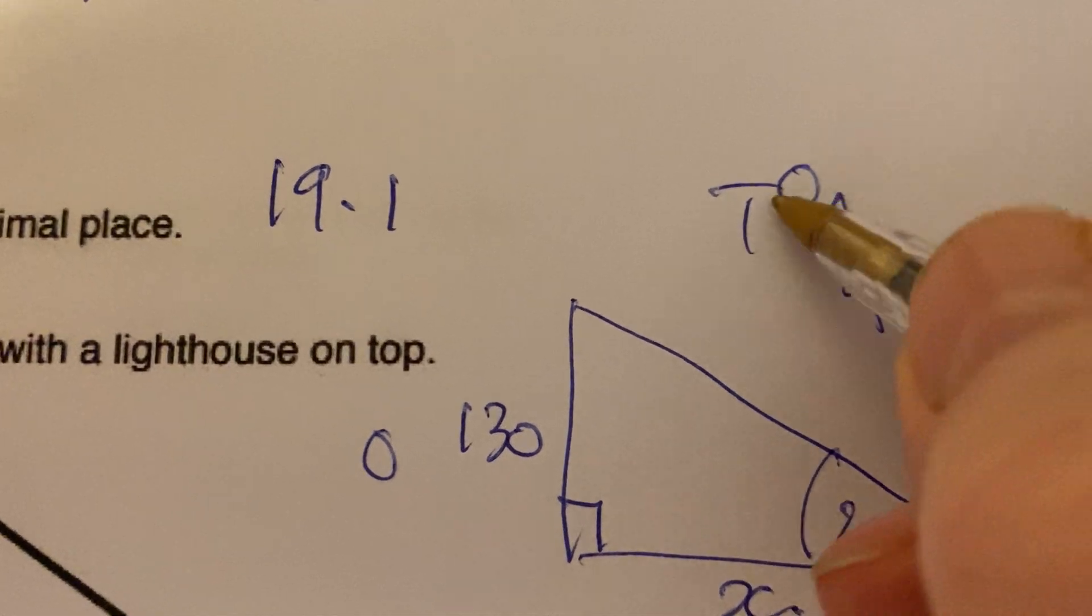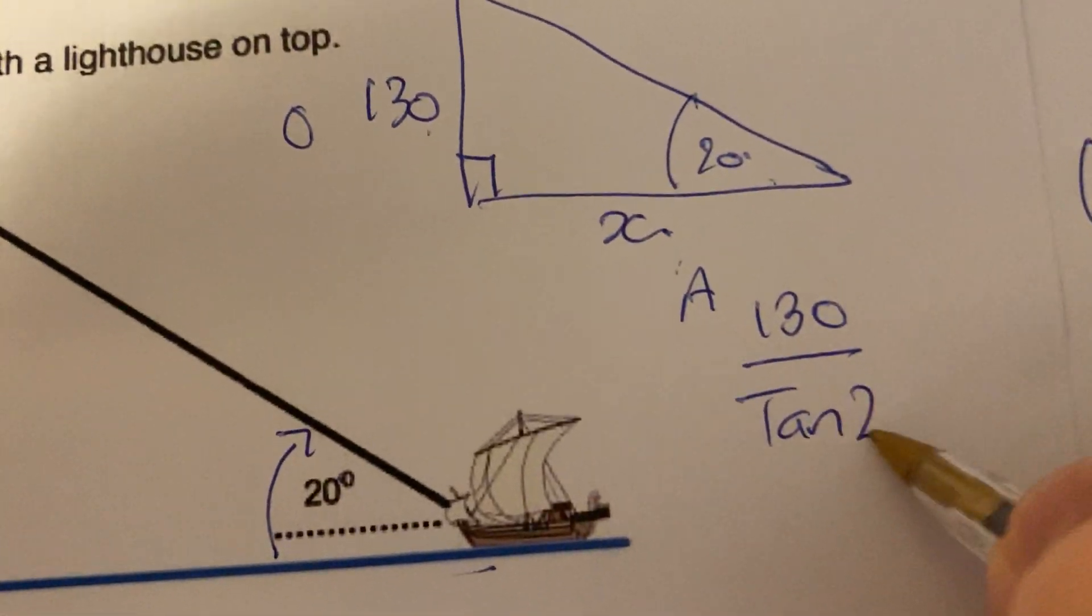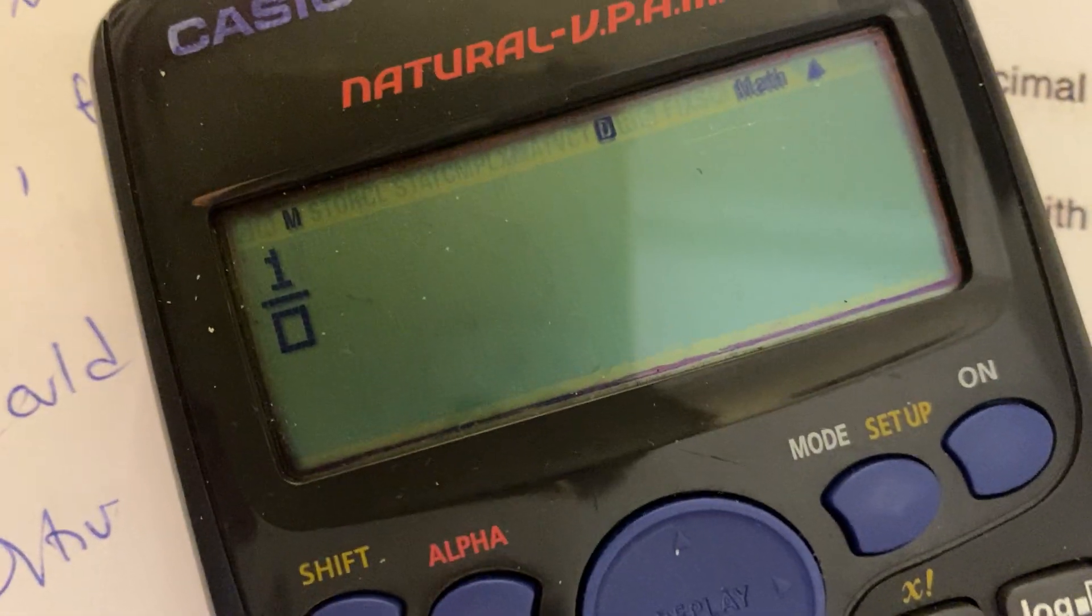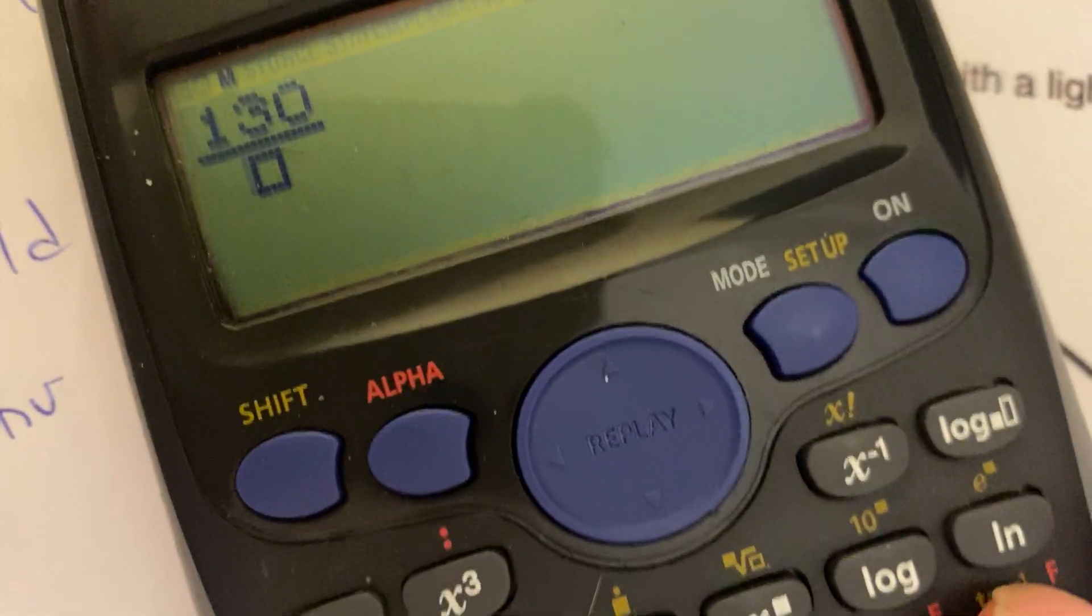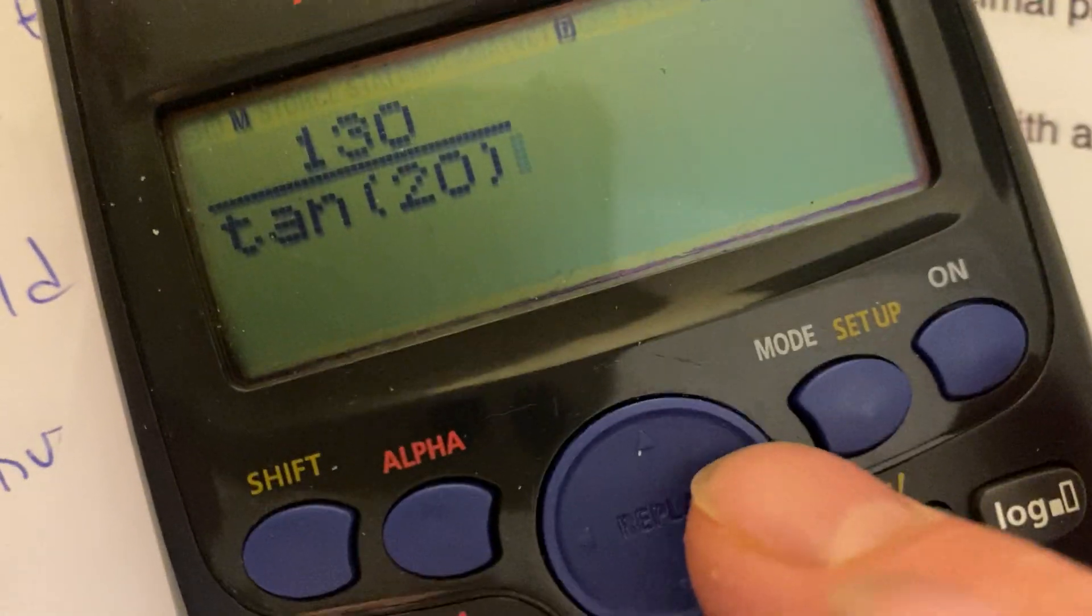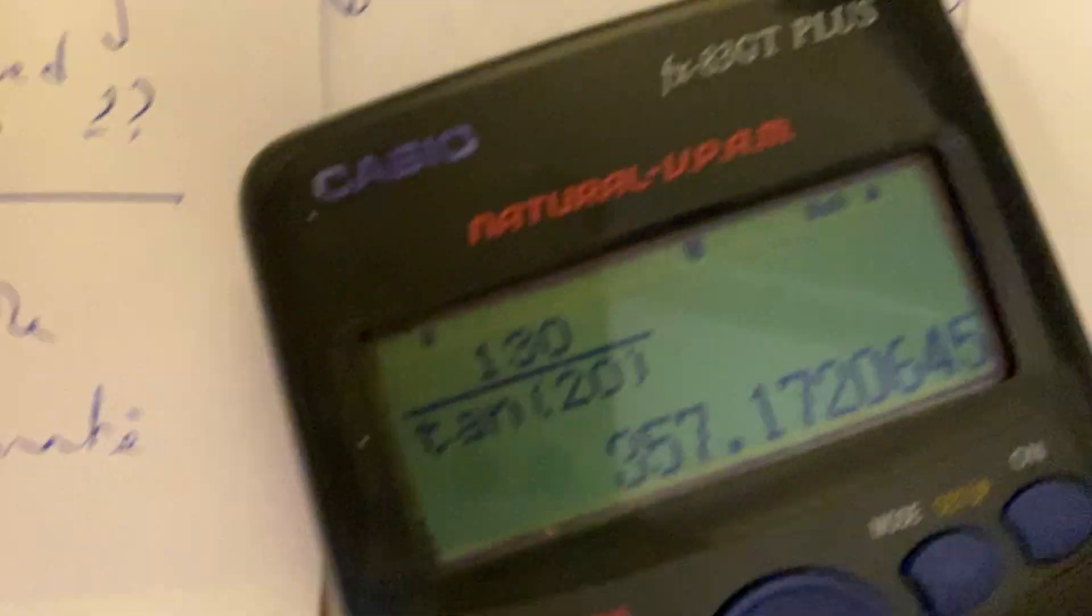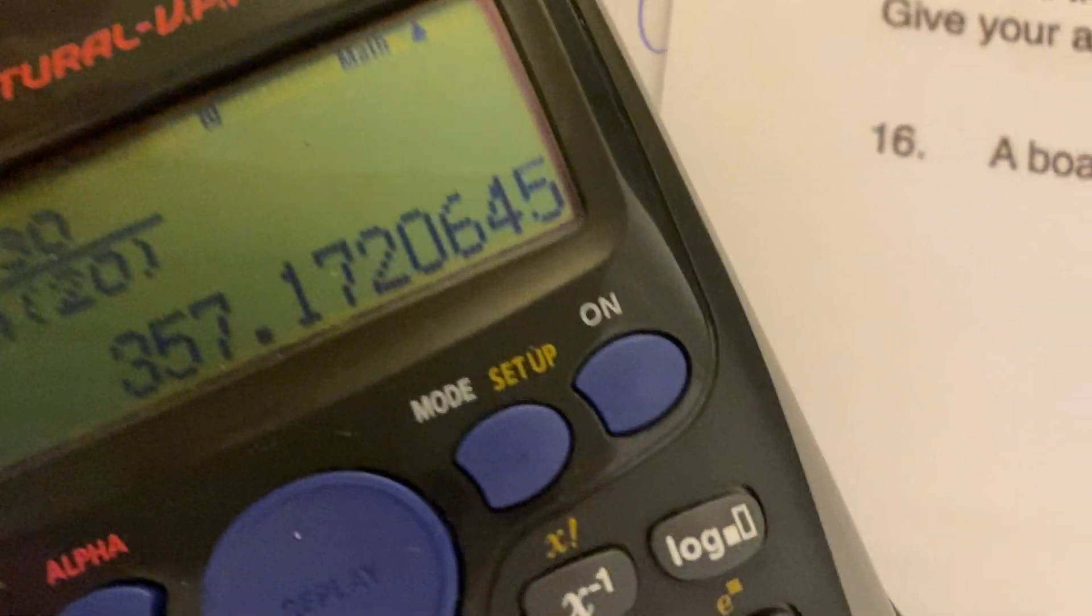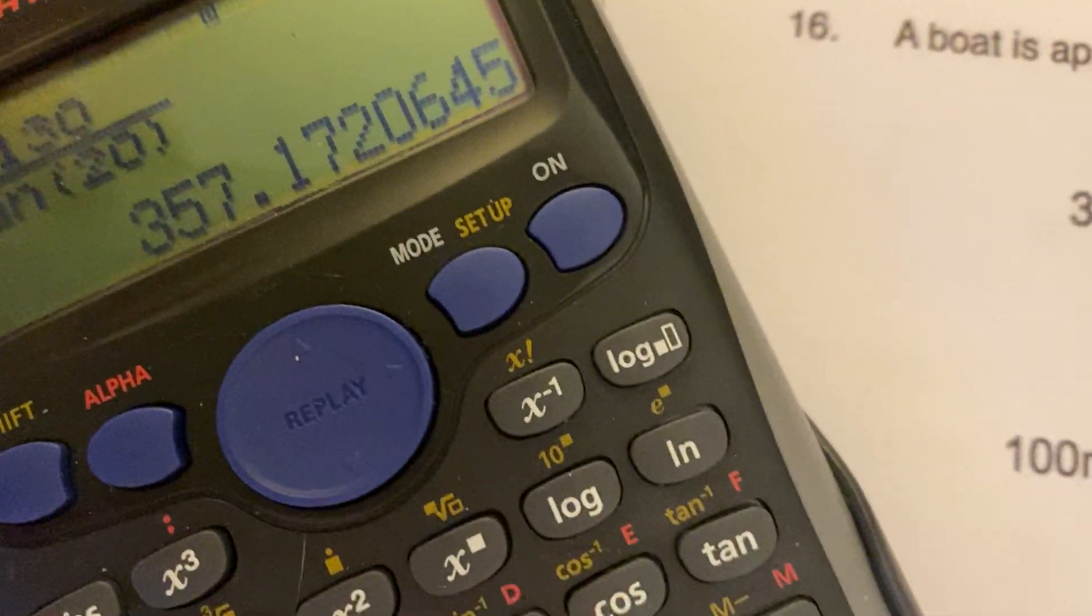I'm looking for adjacent, which is opposite over tangent. So opposite over tan 20 equals - on my calculator, use the fraction button - that is going to be 130 over tan(20). Close bracket, equals 357.12. It doesn't ask you how many degrees of accuracy, so that's just to one decimal place: 357.1 meters.